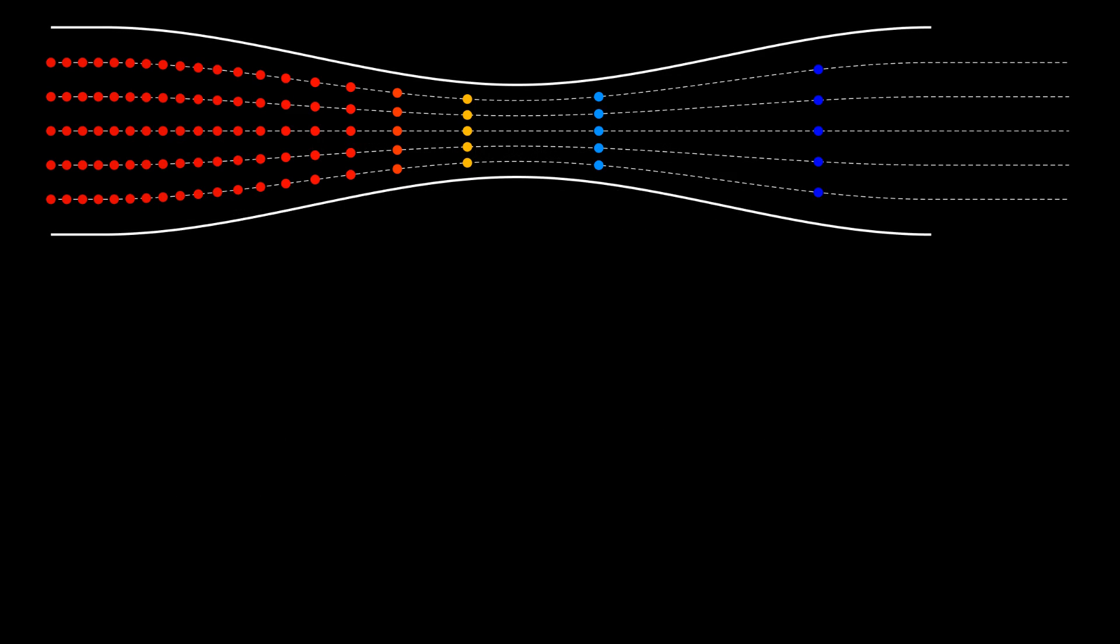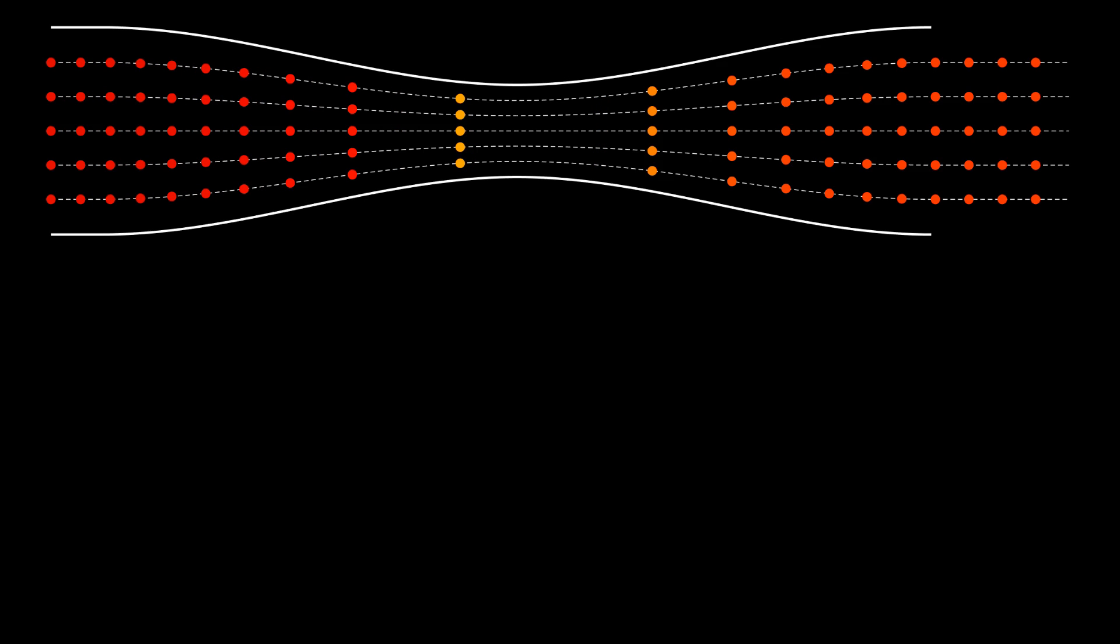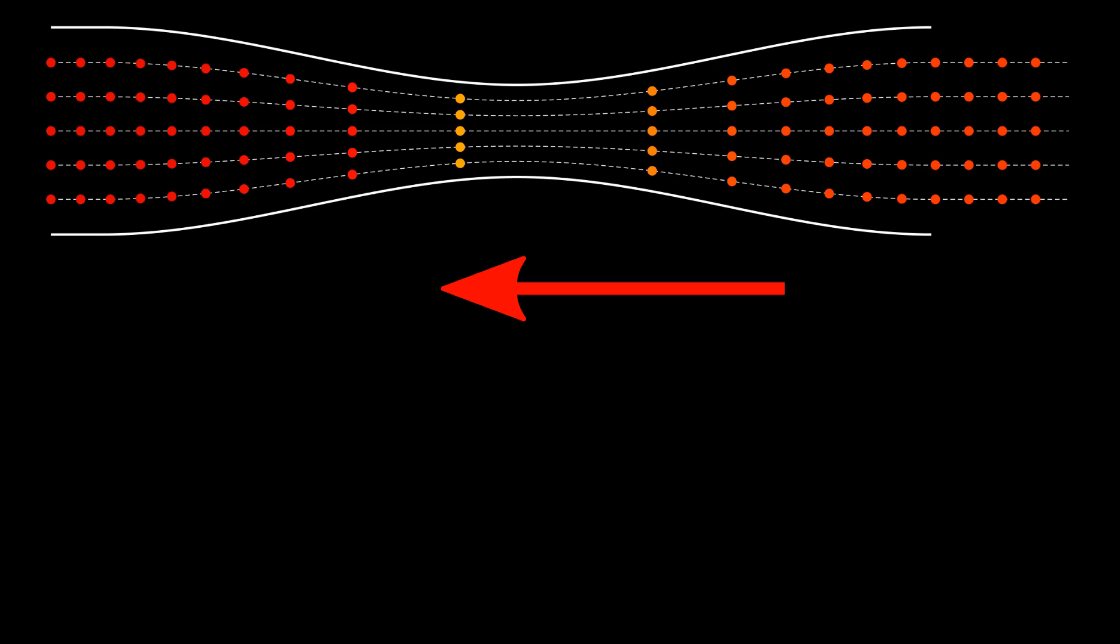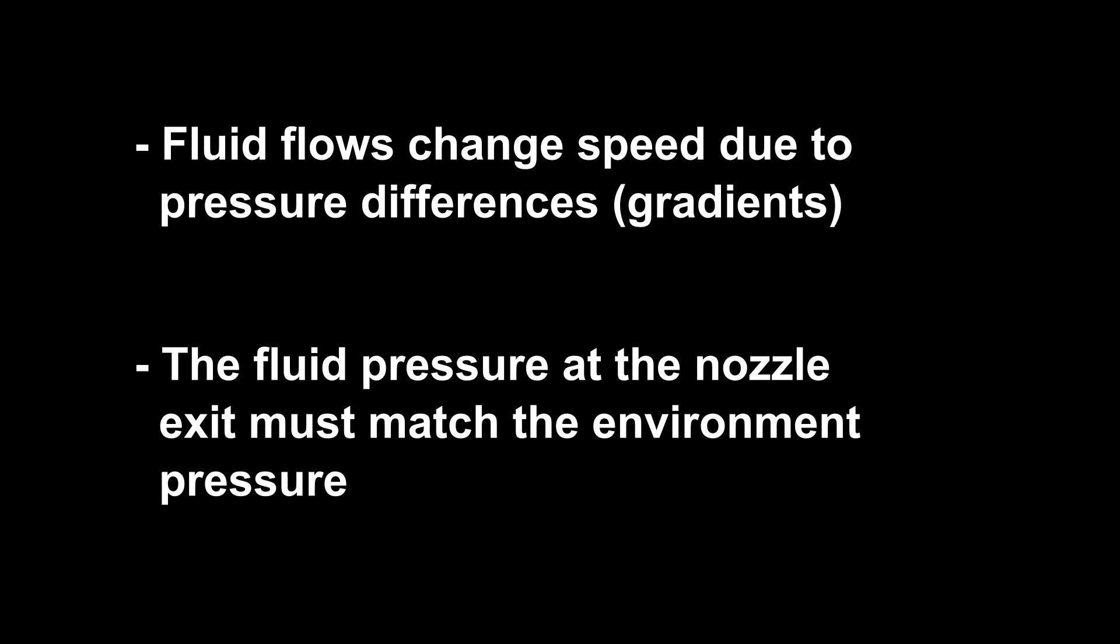When the nozzle is operating in the supersonic regime, there is a pressure gradient at the throat which speeds up the flow above Mach 1. When the nozzle is operating in the subsonic regime, there is a pressure gradient at the throat which slows the flow back down from Mach 1. Understanding these gradients and how they form is what we will talk about for most of this video.